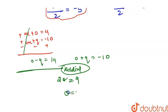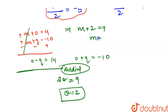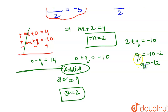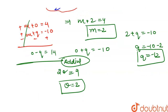Since o = 2, substituting into m+o = 4 gives m = 2. Then substituting m = 2 into m+q = -10 gives q = -12. So we now have all three x-coordinates: m = 2, o = 2, q = -12.